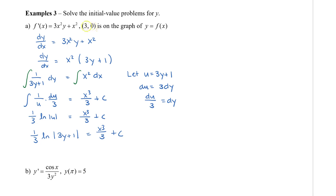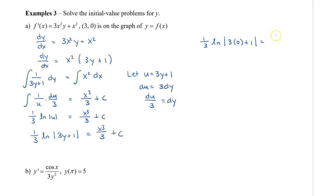Now we take our point (3, 0) and substitute it into the equation. The natural log of 1 is 0, and 3 cubed divided by 3 is 9, so we get 0 equals 9 plus c, meaning c equals negative 9.